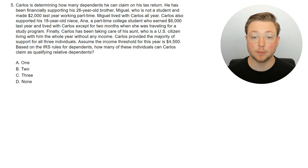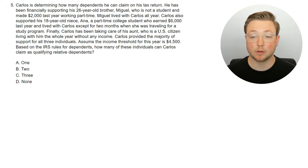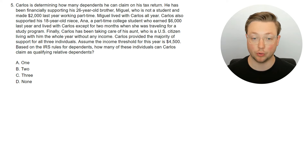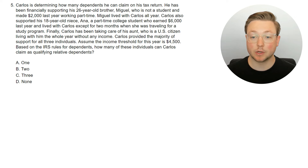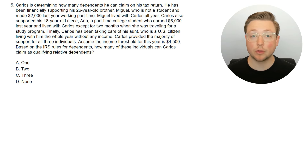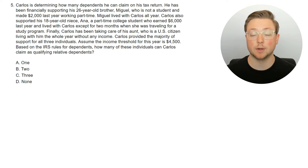Here's the last question. Carlos is determining how many dependents he can claim. He has been financially supporting his 26-year-old brother Miguel, who is not a student and made $2,000 last year working part-time — Miguel lived with Carlos all year. Carlos also supported his 18-year-old niece Ana, a part-time college student who earned $6,000 last year and lived with Carlos except for two months when she was traveling for a study program. Finally, Carlos has been taking care of his aunt, a U.S. citizen living with him the whole year without any income. Carlos provided the majority of support for all three. Assume the income threshold is $4,500. How many of these individuals can Carlos claim as qualifying relative dependents? Pause the video, read through it, and see if you can get the correct answer.